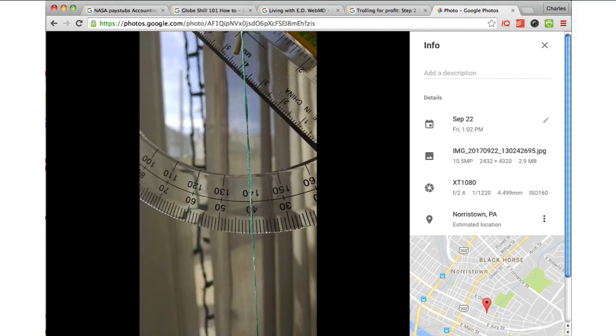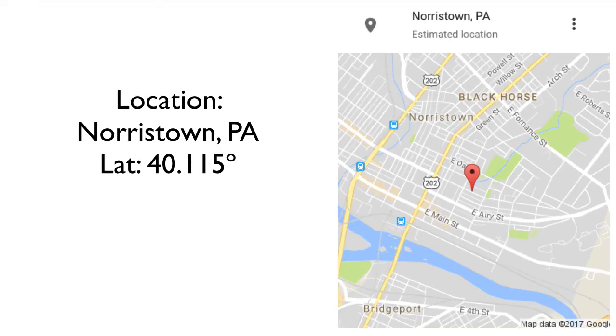And so here's the photo I took a couple minutes after solar noon on the September Equinox. So let's break down. This is actually just a screenshot from my Google photos because I've got an Android phone. So what was the location? Norristown, PA.